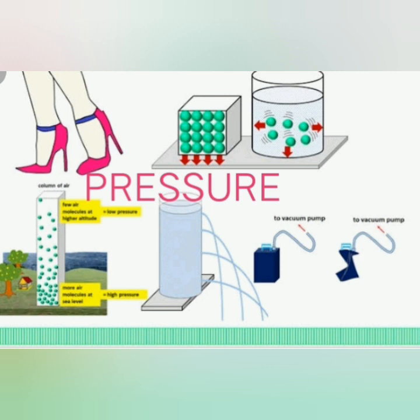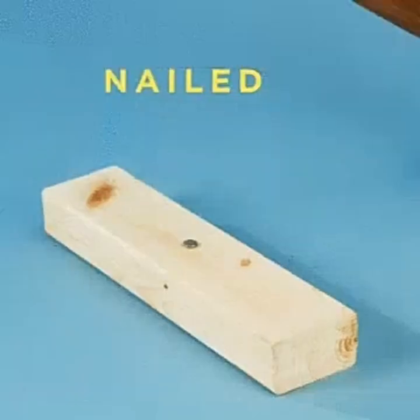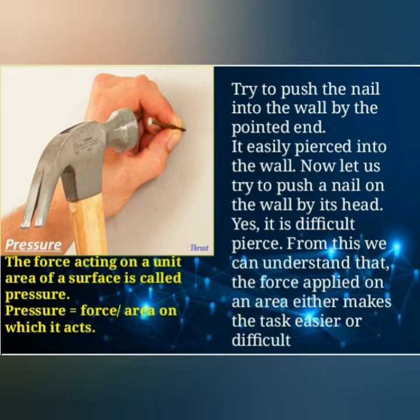Let us find out. Try to push a nail onto the wall or a wooden plank by the pointed end. It is easy to pierce into the wall. But at the same time, try to push the nail into the wall on the flat surface — we find it very hard to pierce into the wall because the area occupied by the pinpoint of the nail is very less compared to the flat end of the nail.